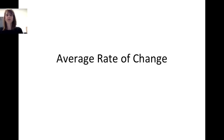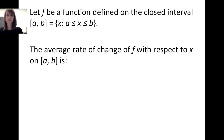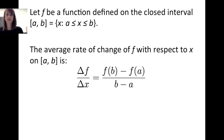In this video, we will define average rate of change. Suppose we have a function f defined on the closed interval from a to b — the set of x such that a ≤ x ≤ b. The average rate of change of f with respect to x on the closed interval from a to b is given by: Δf / Δx = (f(b) − f(a)) / (b − a).